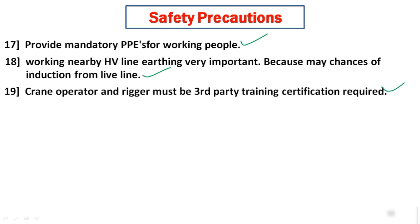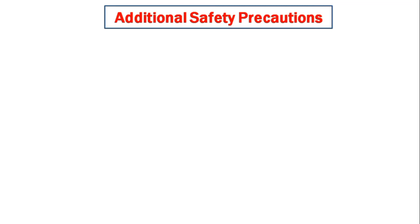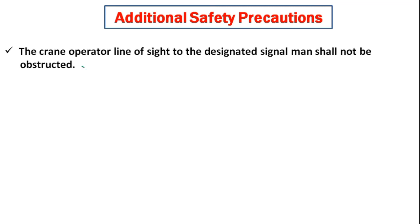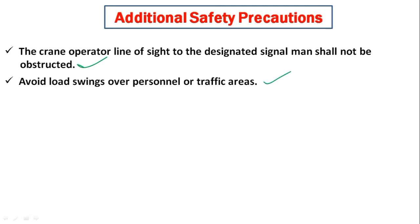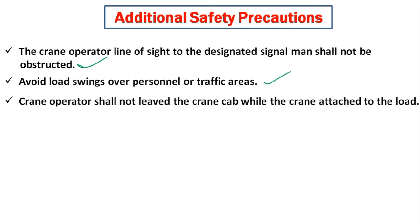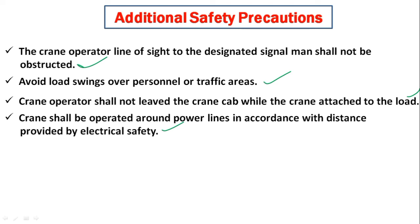The crane operator and riggers must be third-party training certified. Additional safety precautions: the crane operator's line of sight to the designated signal man shall not be obstructed. Avoid swinging loads over personnel or traffic areas. The crane operator shall not leave the crane cab while the crane is attached to a load. The crane shall be operated around power lines in accordance with the required safe distances.